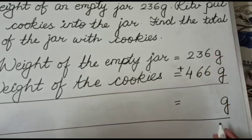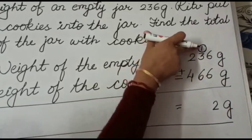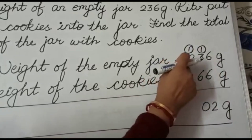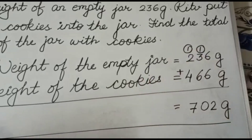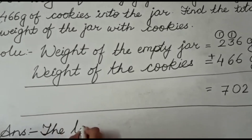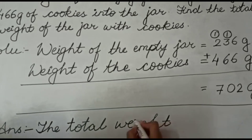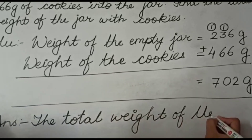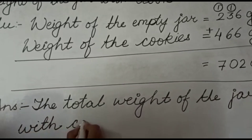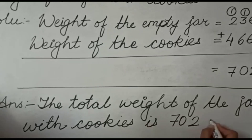6 plus 6 is 12, so we write 2 and 1 is carry. 6 plus 3 is 9, and 9 plus 1 is 10, so we write 0 and 1 is carry. 4 plus 2 is 6, and 6 plus 1 is 7. So here we have the total weight. The total weight of the jar with cookies is 702 grams.